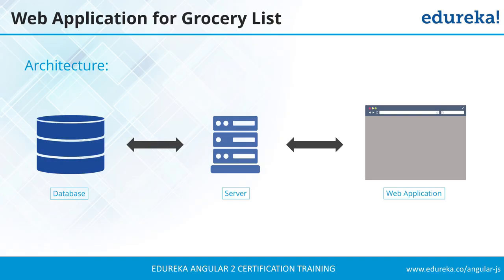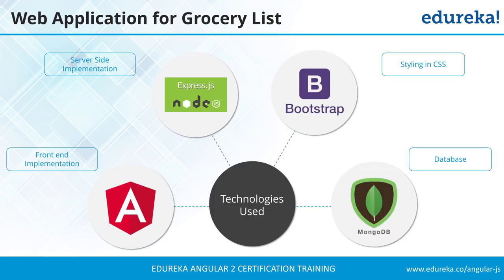The architecture of the grocery list application looks like this: you have a web application on one end, a database storing the grocery list data, and a server in the middle that allows you to make changes, update data, and provide it to the client. For the backend we're using MongoDB and Express.js along with Node.js. On the client side we'll be using Angular as well as Bootstrap — Bootstrap for styling and Angular for the client-side web application development.